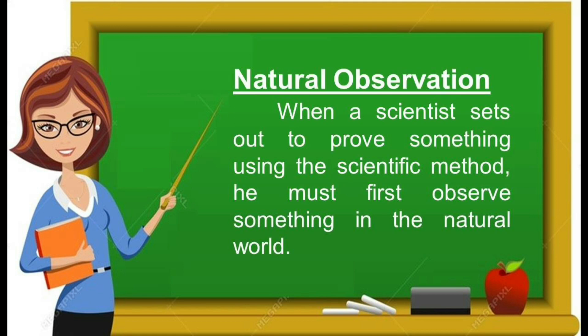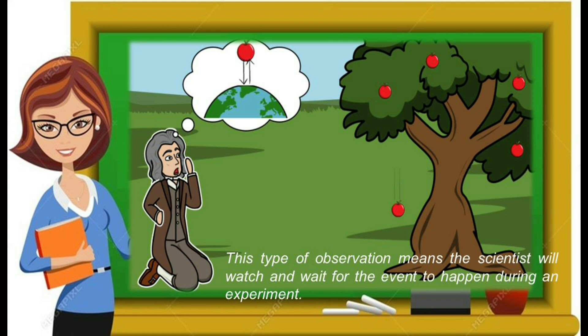Let us talk first about natural observation. When a scientist sets out to prove something using the scientific method, he must first observe something in the natural world. For instance, Sir Isaac Newton theorized that there was a force called gravity after he watched an apple fall from a tree — this would be a natural observation. Newton saw something happen in nature without any intervention on his part or part of anyone else. This type of observation means the scientist will watch and wait for the event to happen.